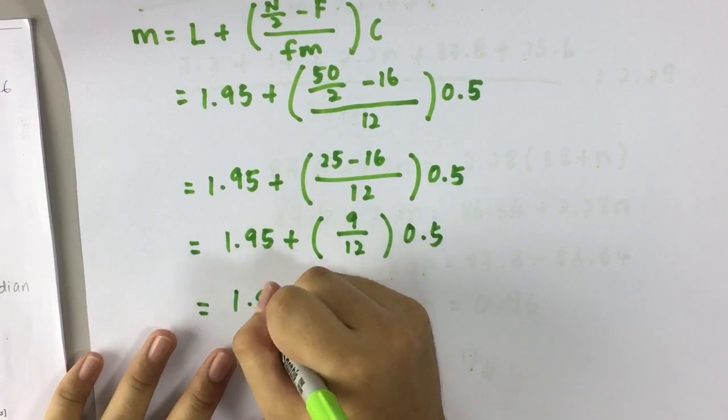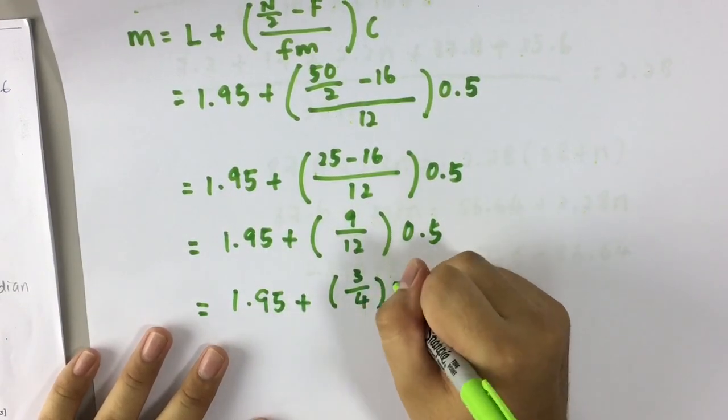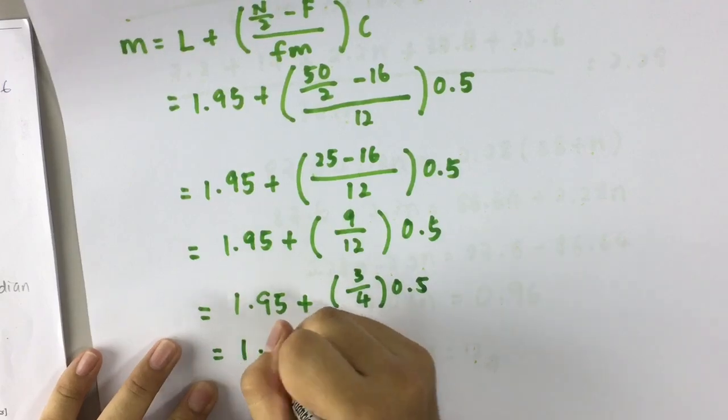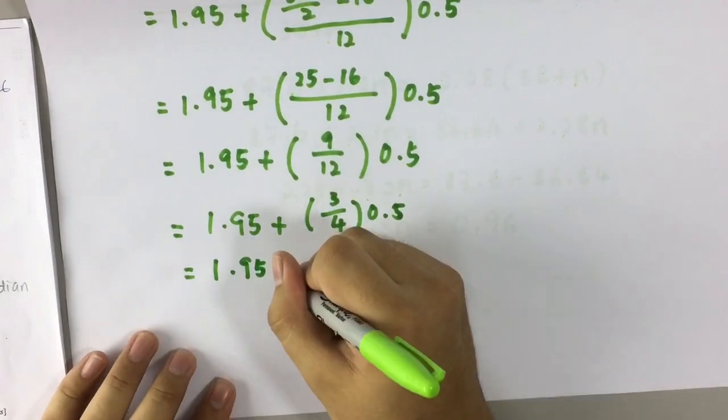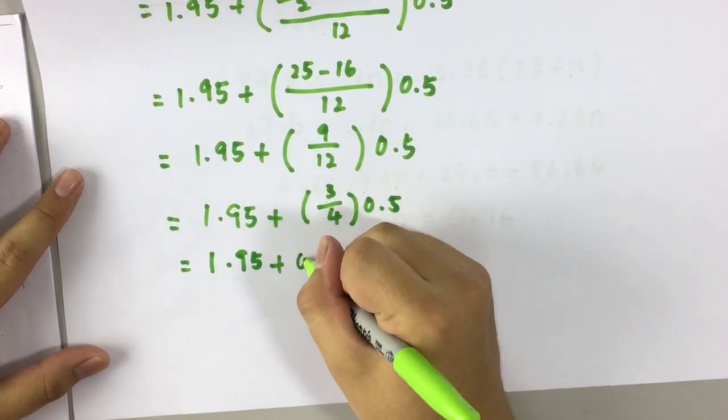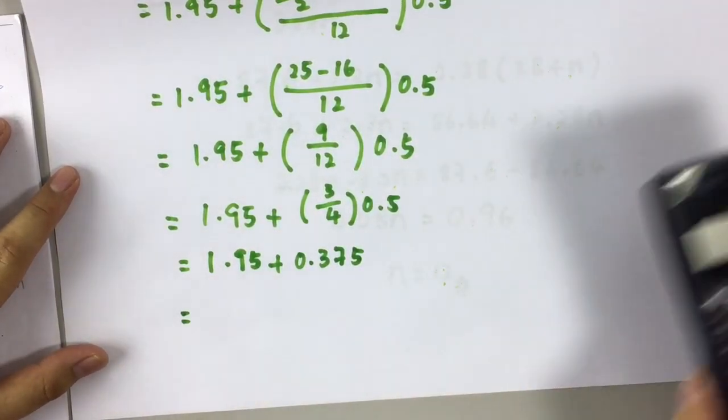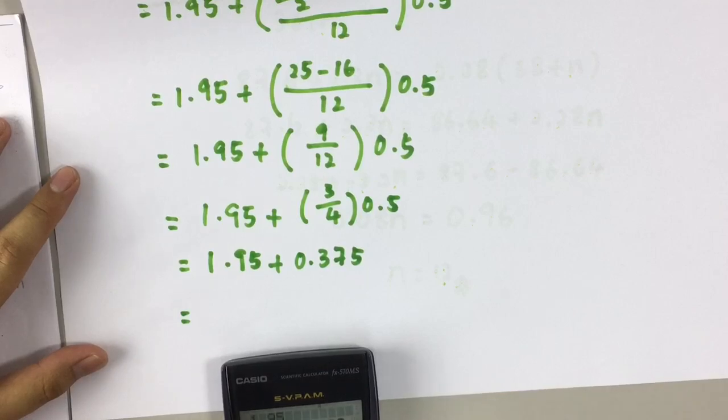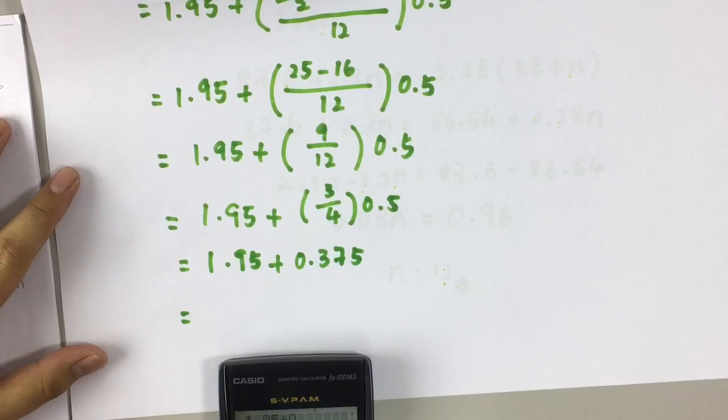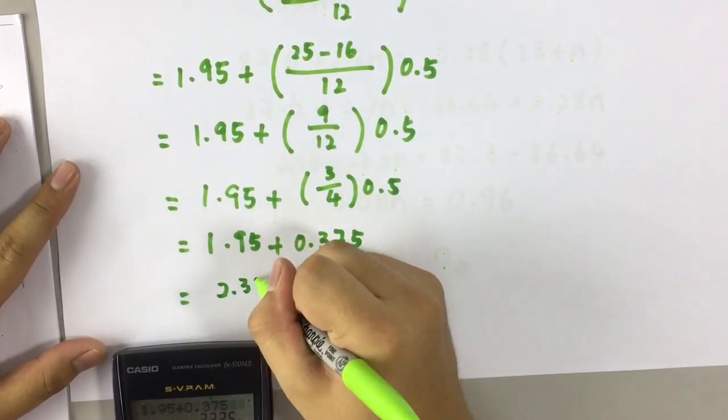We times it, becomes 0.375. Now finally, we got the answer: 2.325.